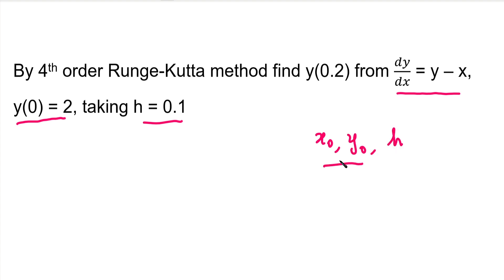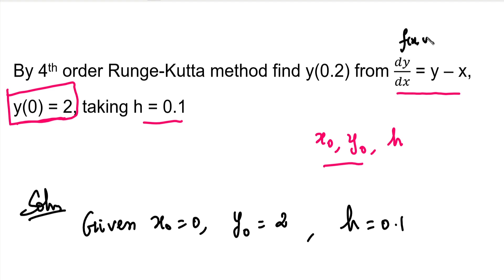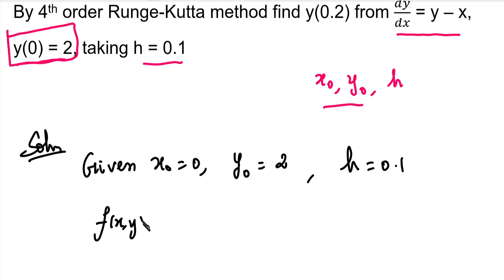X0 and y0 values are given in the question as the initial condition. We have x0 equal to 0, y0 equal to 2, and h equal to 0.1. We have a differential equation: dy/dx = f(x, y), and f(x, y) = y minus x.